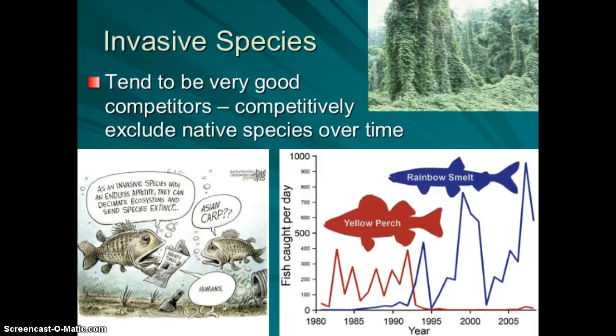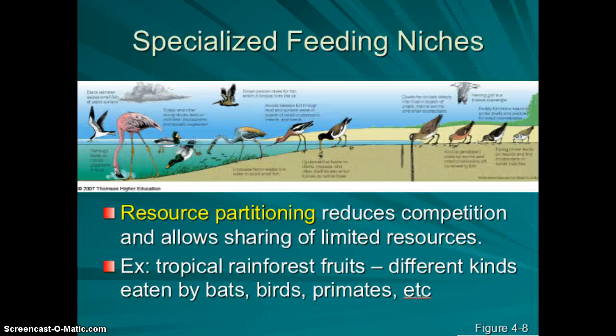We see competitive exclusion a lot with invasive and native species — invasives tend to be strong competitors and gradually exclude native species, choking off their resources. Resource partitioning, on the other hand, allows coexisting species to share resources by specializing their niches so they no longer overlap. This is most common in areas of high biodiversity where many different types of food are available.